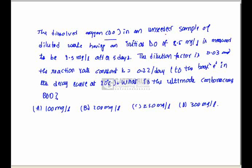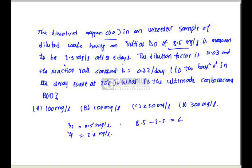Next question: find the dissolved oxygen (DO) in an unseeded sample of diluted waste. Initial DO = 8.5 mg/L, final DO after 5 days = 2.5 mg/L. DO consumed = 8.5 − 2.5 = 6 mg/L. The dilution factor is 0.03 and the reaction rate constant K = 0.22 per day.